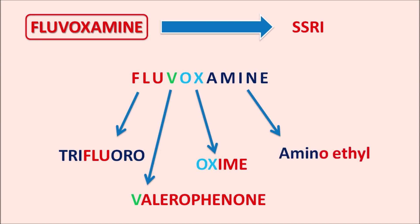The suffix 'amine' indicates this drug forms an oxime with a two amino ethyl side chain. So fluvoxamine has a trifluoromethyl group attached to the para portion of valerophenone, and this valerophenone forms an oxime with an aminoethyl side chain.